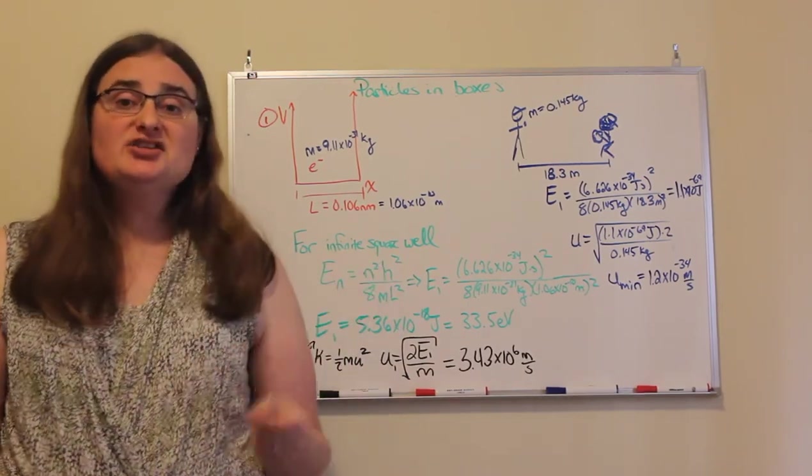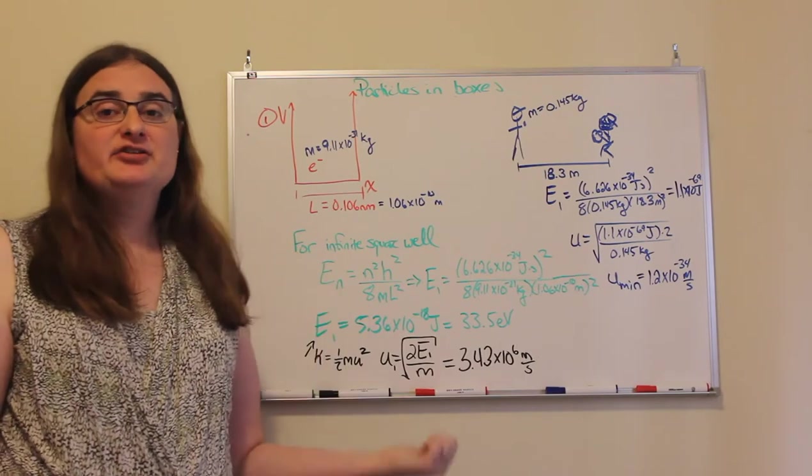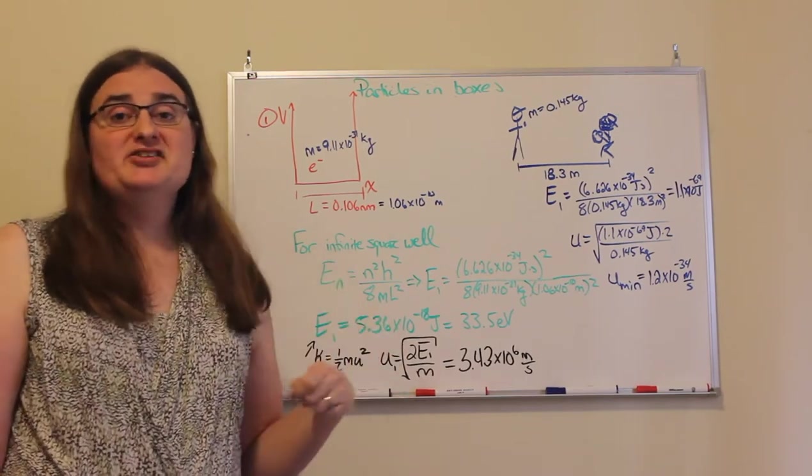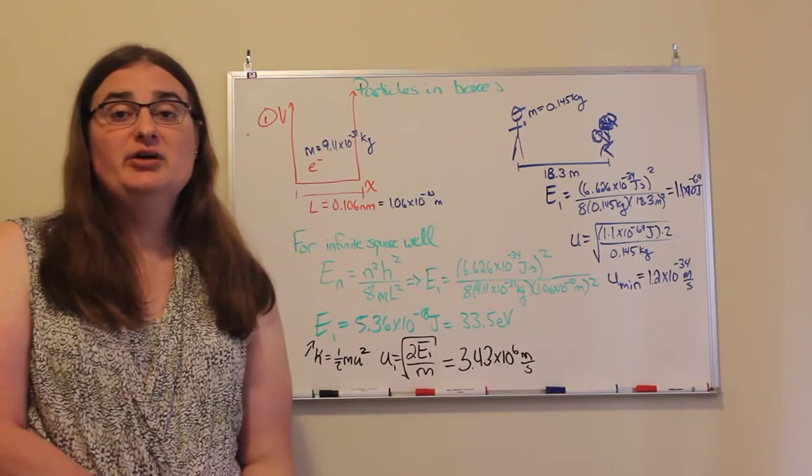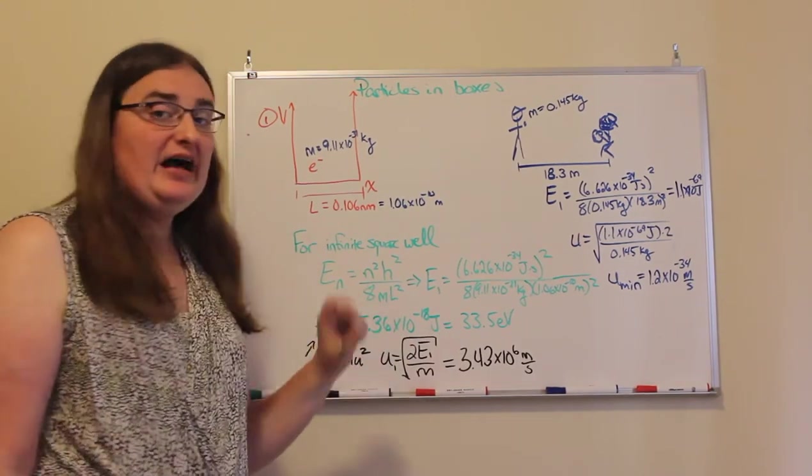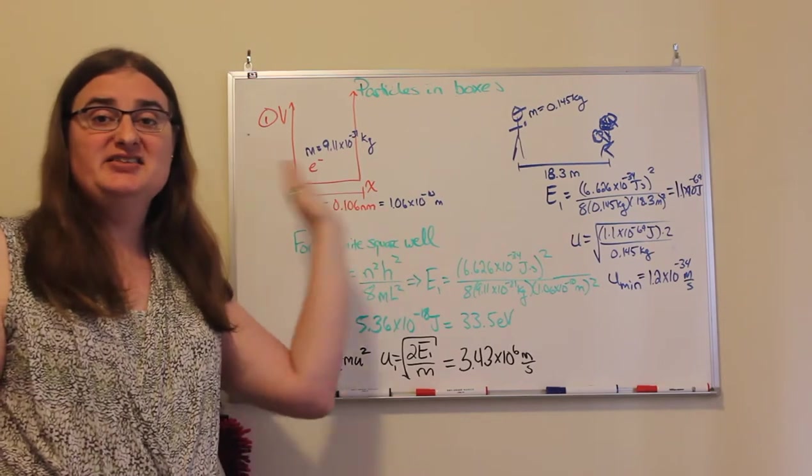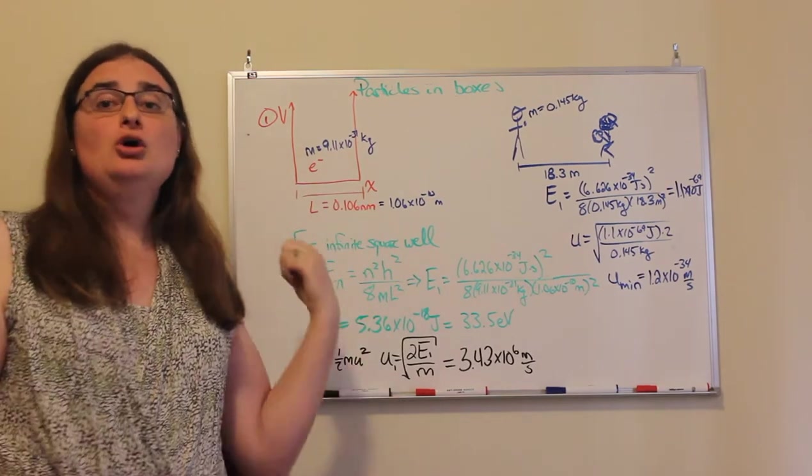Times Planck's constant h squared, divided by a factor of 8, divided by the mass of the particle, which here's an electron, 9.11 times 10 to the negative 31 kilograms, and then divided by the size of the box, the distance across L squared.